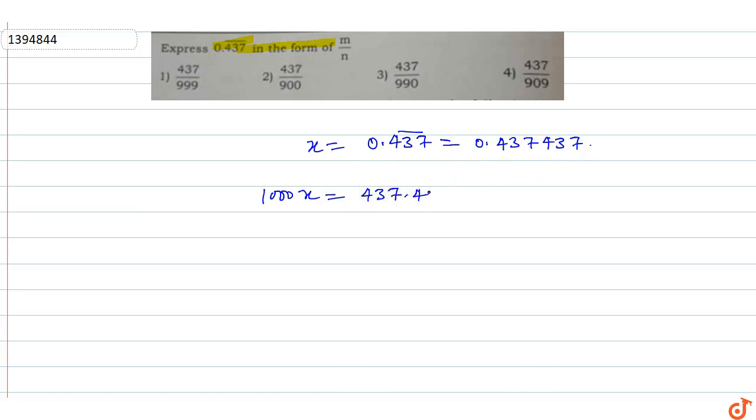437437... where three digits repeat. This gives us equation one. Now we'll create equation two and subtract equation one from equation two.